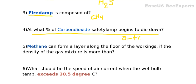The next question: methane can form a layer along the floor of the workings if the density of the gas mixture is more than what value? Methane generally accumulates at the roof. The specific gravity of methane is 0.553. The correct answer is 1% — if the mixture is more than 1%, it will be found on the floor; otherwise it will be found on the roof.